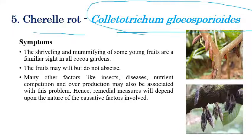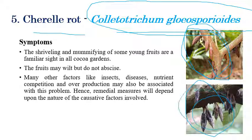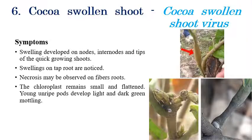Cherry Rot is caused by Colletotrichum gloeosporioides, though insects and nutrient deficiencies also contribute. The main characteristic symptom is mummification of fruits — fruits are completely mummified, turn black, and are covered with black moldy growth. The fruits cannot produce any economic yield. Since this is not only caused by Colletotrichum but also by insects and nutrient competition, proper nutrient application is recommended.